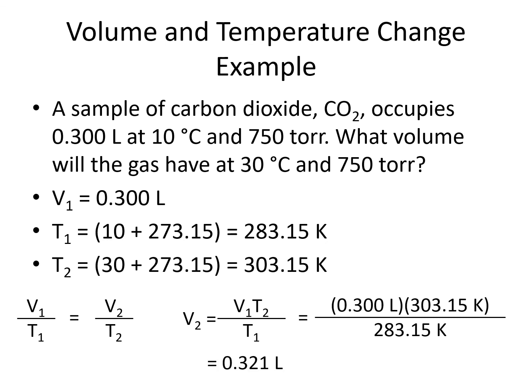We get liters because that was the unit for V1, and Kelvin cancels out in the calculation. Our answer should make sense with what we know from Charles' law — the temperature is going up from 10 to 30 degrees Celsius, so we expect the volume to go up. It does: it goes up from 0.300 to 0.321 liters.